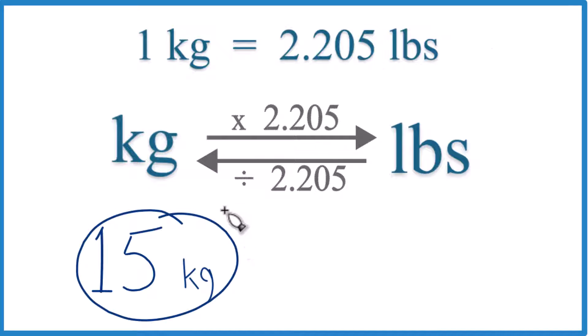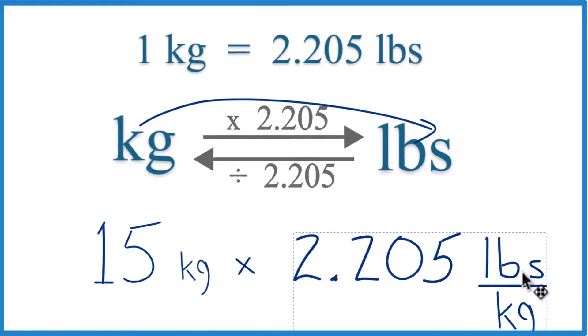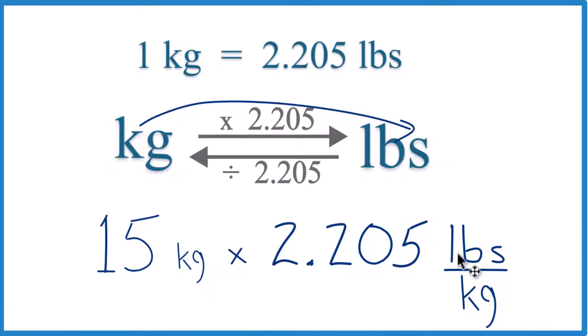We have 15 kilograms, so we're going kilograms to pounds. We're going to multiply by that 2.205 number. So it's 2.205 pounds per kilogram. That comes right there from the conversion factor.